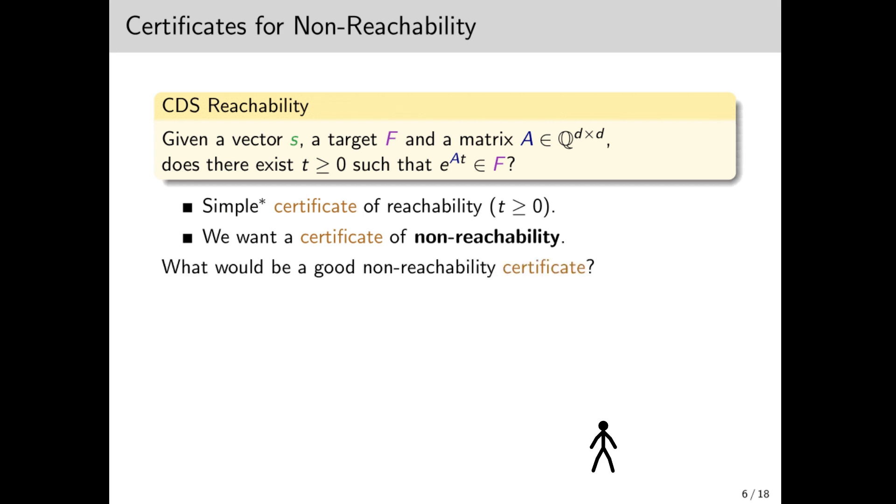What would be a good non-reachability certificate? It should be a set I that separates the orbit from the target, thus showing non-reachability. But in order for it to be useful, it should also be simple to describe, whatever that means. But if I is simple, then proving it contains the orbit becomes difficult. Basically, we're back at the reachability problem. So what we propose is to further restrict this condition into two parts. I should contain the initial point, and I should be invariant under the dynamics. So if we apply the dynamics on any point in I for any length of time, we stay within I. Note that these two properties together imply that the entire orbit is contained in I, as we wanted. All that remains is to explain what simple to describe means. For this, we take a little detour.